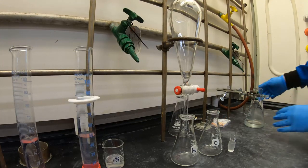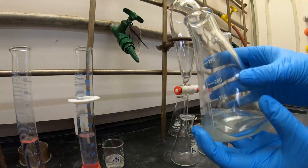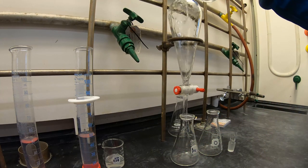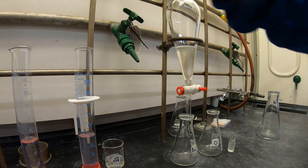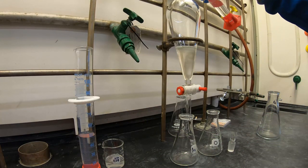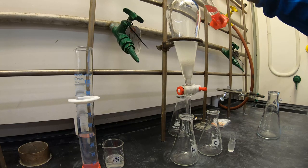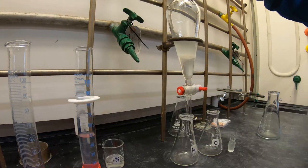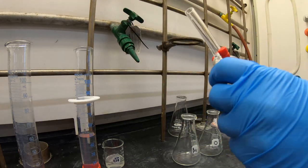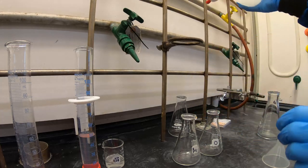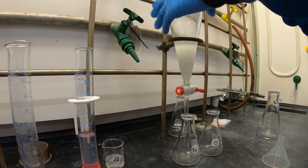Set up a separatory funnel, then transfer the toluene filtrate to the funnel. You're going to wash this twice using 25ml portions of 3 molar HCl. If you recall the toluene density, you'll realize that the organic layer is on top. Since you're using acid today, be sure to vent during shaking.